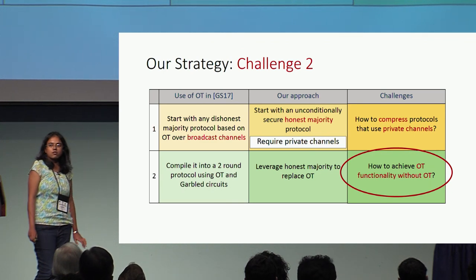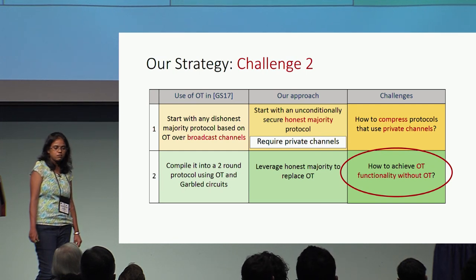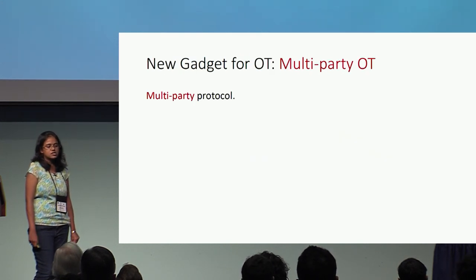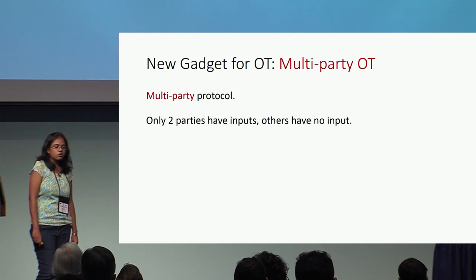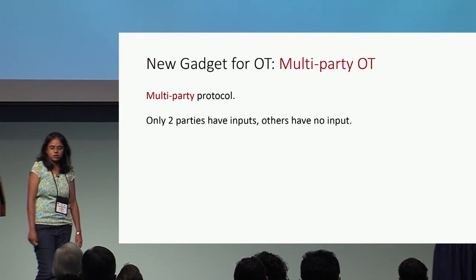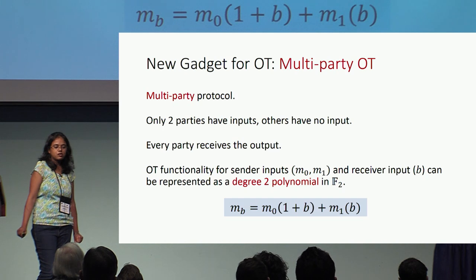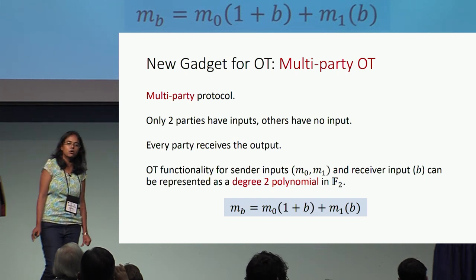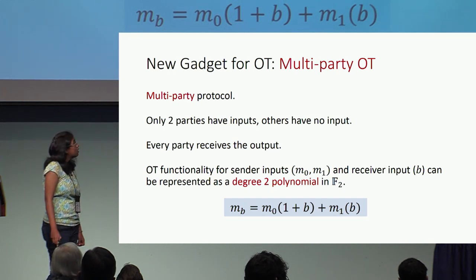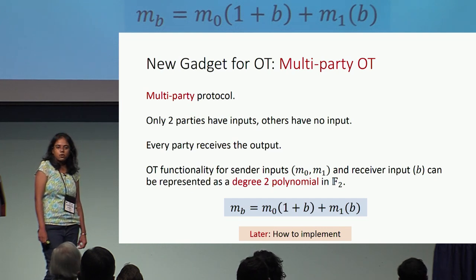To solve our second challenge — achieving OT functionality without using OT — we devise a new gadget called multi-party OT. This is a multi-party protocol where only two parties have inputs but all parties learn the output. The OT functionality with sender inputs M0, M1 and receiver input B can be viewed as a degree-two polynomial in F2.